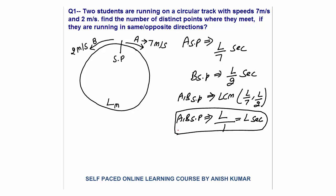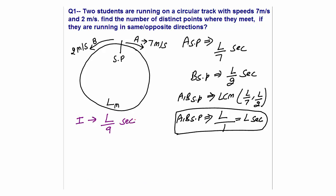Now I will calculate when they will meet for the first time on the track. A is running with a speed of 7, B is running with a speed of 2, and they are both running in opposite direction. The relative speed will be 9 meters per second, and they have to reduce the gap of L meters between them. So the time would be L/9. The first meeting will take place at L/9 seconds.